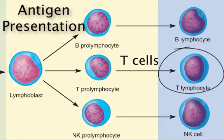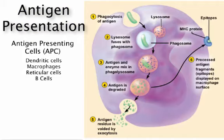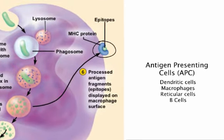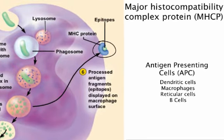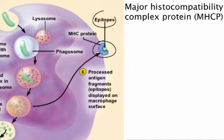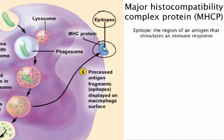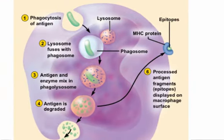For that reason, some of the immune cells in our bodies function as antigen-presenting cells. Each antigen-presenting cell has a membrane protein called a major histocompatibility complex protein. These MHC proteins are responsible for displaying an antigen's epitopes to T-cells in the lymph node.